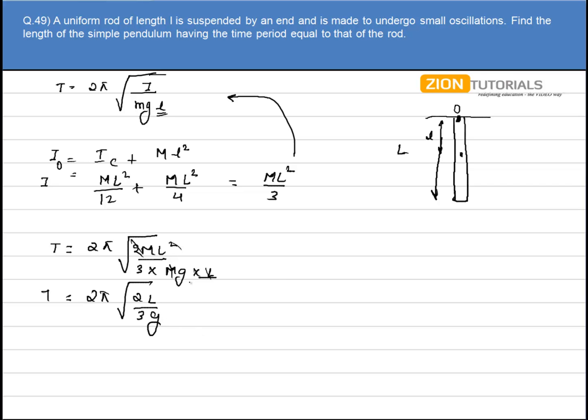Now I have a simple pendulum which is having the same time period, and we know that the time period of a simple pendulum is given by 2π under root of L/G. So 2π is cancelled and G is also cancelled. So the length of the simple pendulum comes out to be 2L/3.